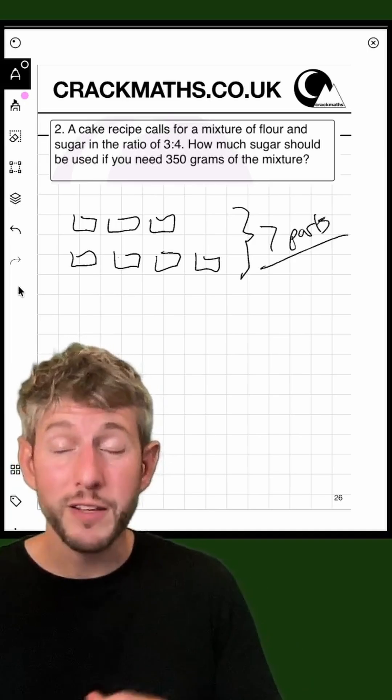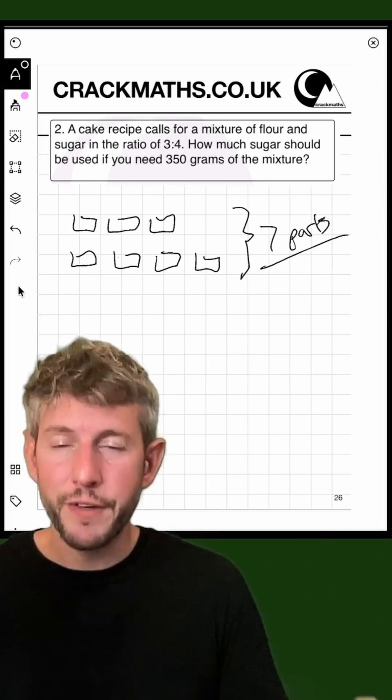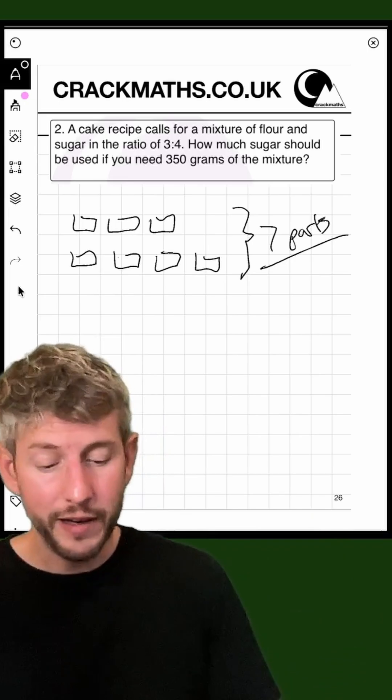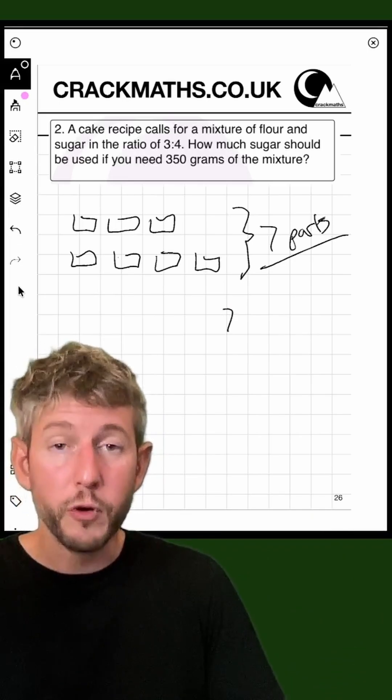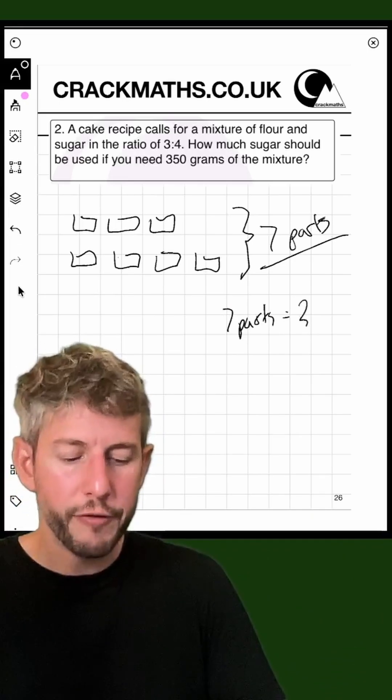Now these seven parts have to come together to equal 350 grams. So in a way, it's a bit like direct proportion. So we've got seven parts equals 350 grams.